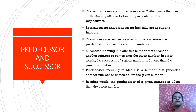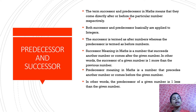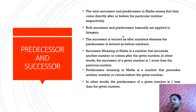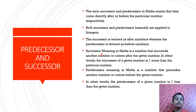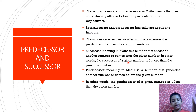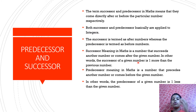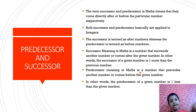Predecessor and successor. The terms successor and predecessor in math mean that they come directly after or before a particular number respectively. These can be applied to integers. The successor is termed as the after number, whereas the predecessor is termed as the before number. Successor means a number that comes after a given number — in other words, one more than the previous number. Predecessor means a number that comes before the given number — in other words, minus 1 from the given number.